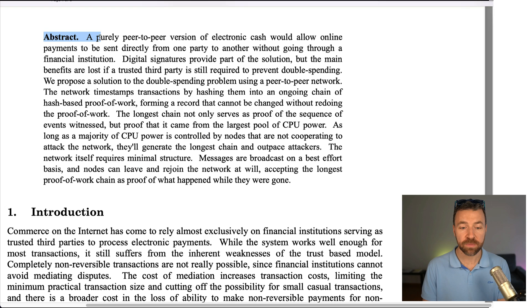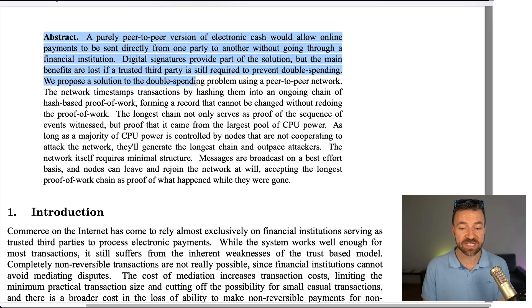Abstract: a purely peer-to-peer version of electronic cash would allow online payments to be sent directly from one party to another without going through a financial institution. Digital signatures provide part of the solution, but the main benefits are lost if a trusted third party is still required to prevent double spending. We propose a solution to the double spending problem using a peer-to-peer network.